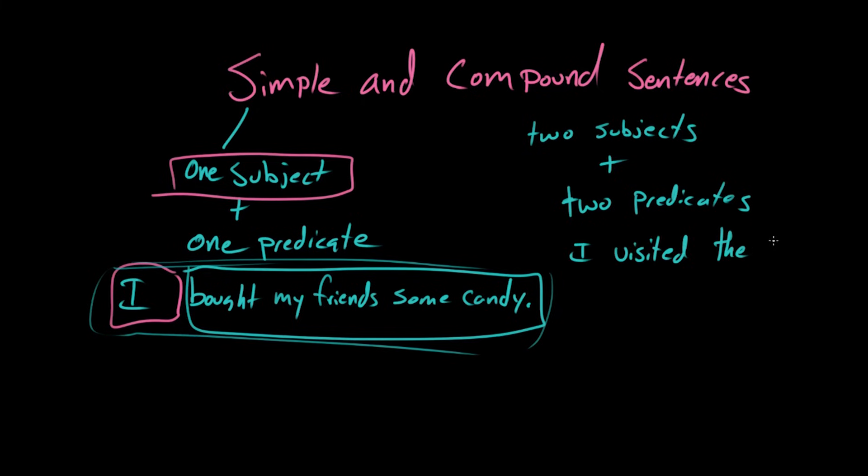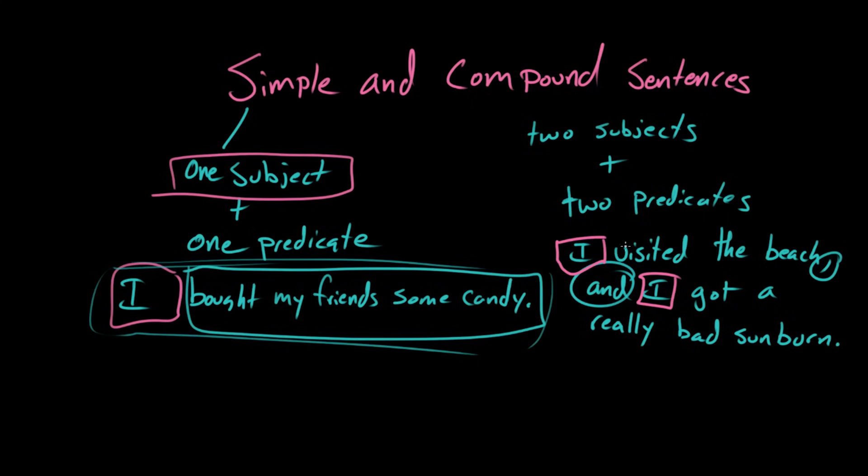So, I visited the beach and I got a really bad sunburn. So, when we're looking at this, this is really two sentences together, joined by the comma and this and. Right? So, we have our subject. I visited the beach, I got a really bad sunburn, and we have our two predicates. I visited the beach, got a really bad sunburn.